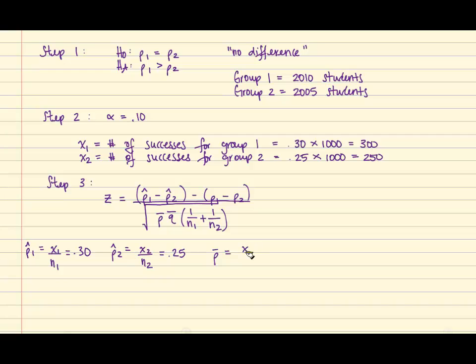P bar is found by taking x1 plus x2 and dividing that result by N1 plus N2. And so once we plug in the values for x1, x2, N1 and N2, we obtain a result of .275.